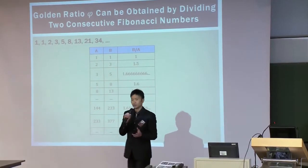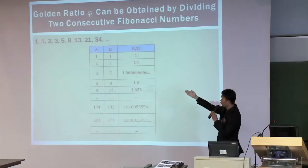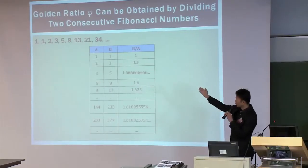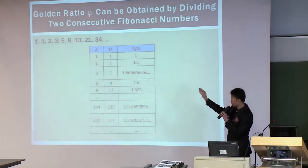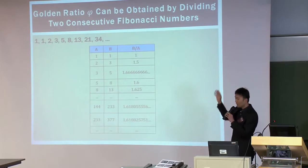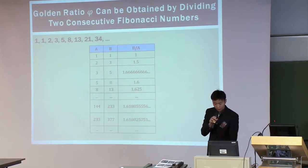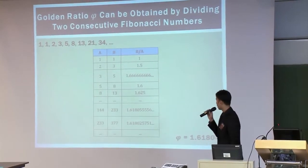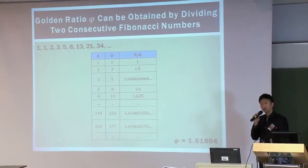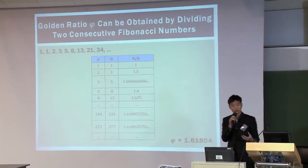Fibonacci numbers have many different properties. One property that comes out from the Fibonacci numbers is the golden ratio, as the student just mentioned. So how do we calculate the golden ratio? Basically by dividing two consecutive Fibonacci numbers. For example, one divided by one gives you one. The next Fibonacci numbers are three and two, so three divided by two would be 1.5. You keep doing this and the numbers will eventually converge to 1.61804. So this is what we call the golden ratio.